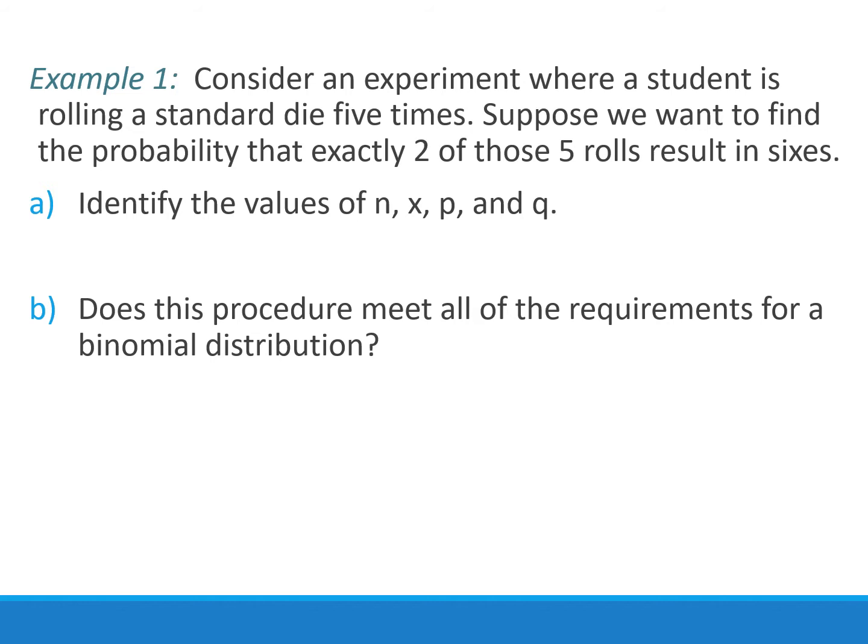N is the sample size. How many trials are there in our experiment? We're rolling the die five times. X is the number of successes. In this case, we're identifying rolling a six as our success, and we want to get exactly two sixes. P is the probability of rolling a six, and since it's a standard six-sided die, we have a one out of six chance of rolling a six. Q is always the complement of that, so one minus one-sixth equals five-sixths.